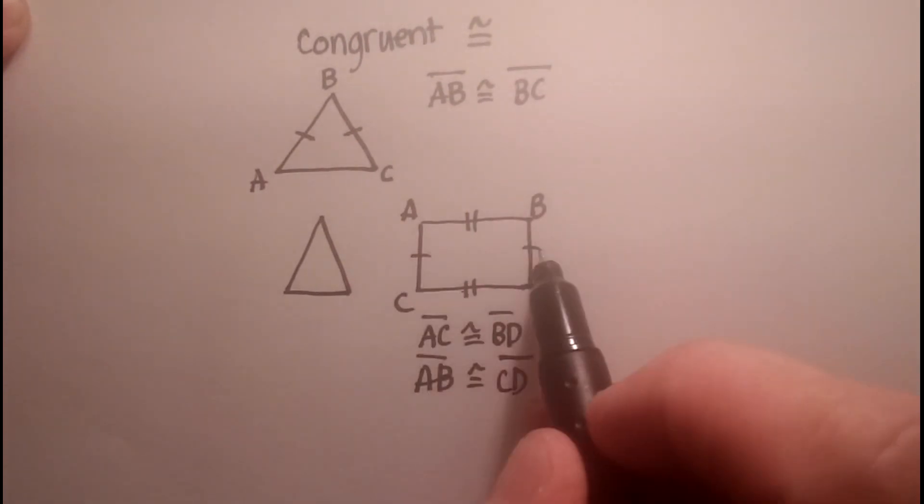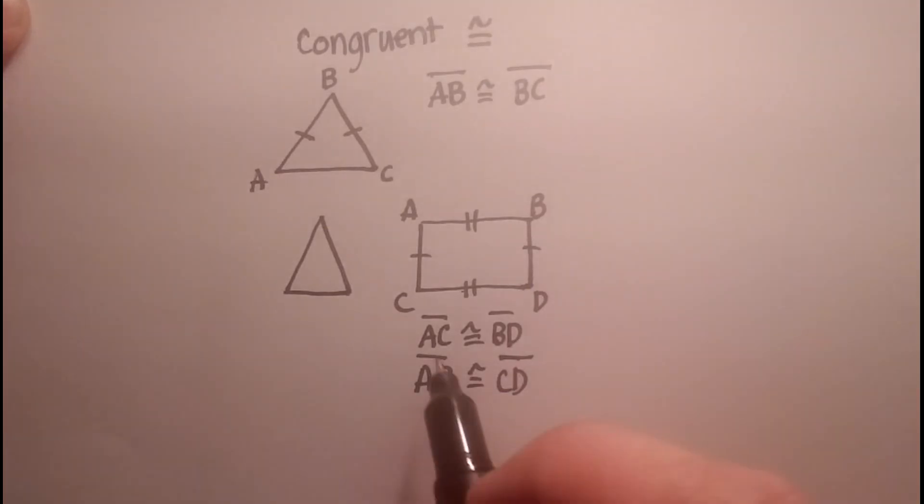So they have to match up. So if this matches this, then it means these are exactly the same length. If this matches this, again, the same length. And then that's how you write it out. Again, an equal sign with a little wave on the top. I hope that was helpful.